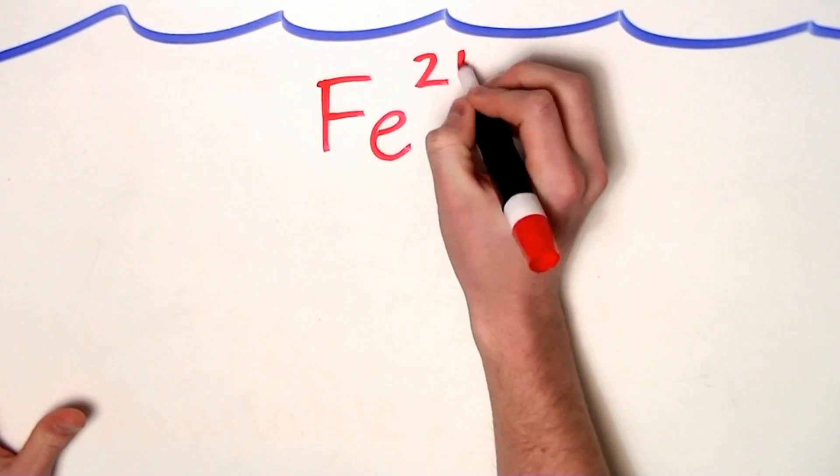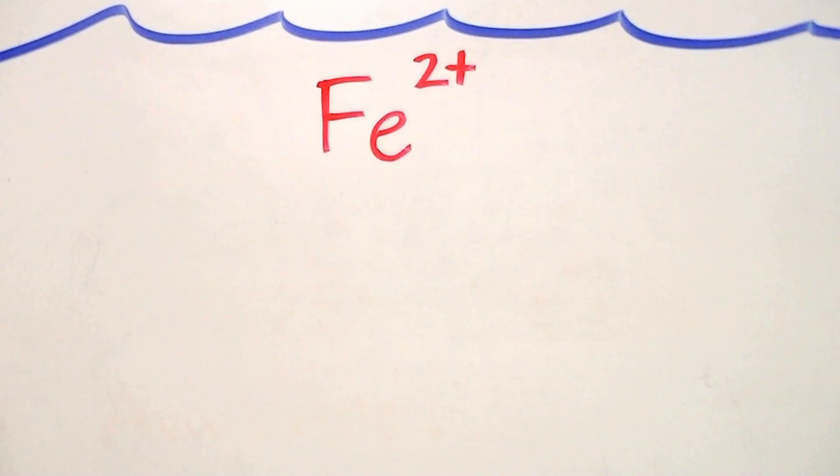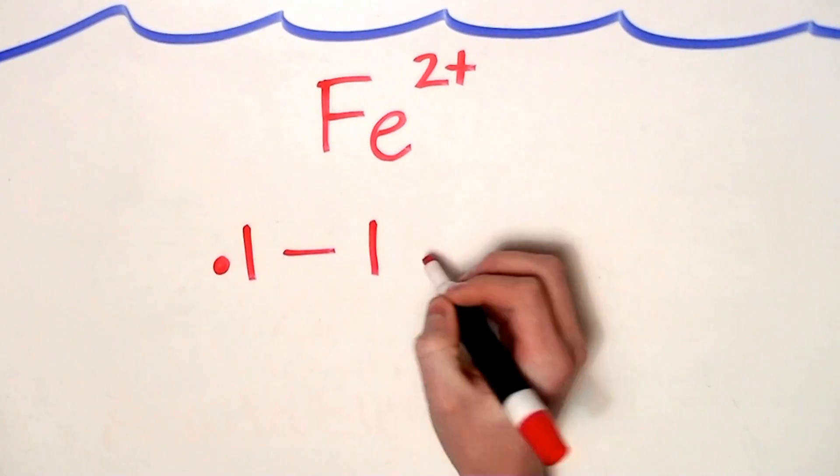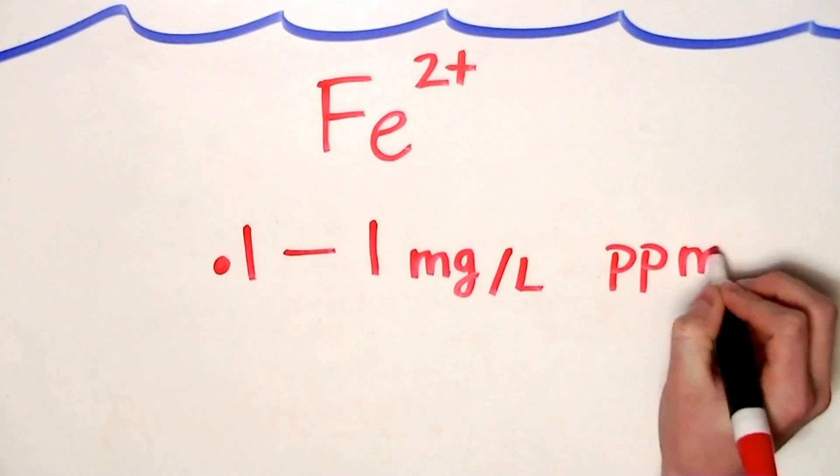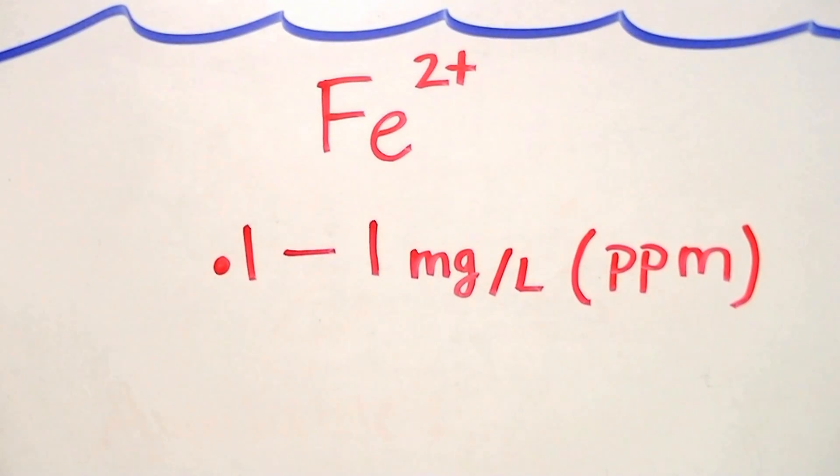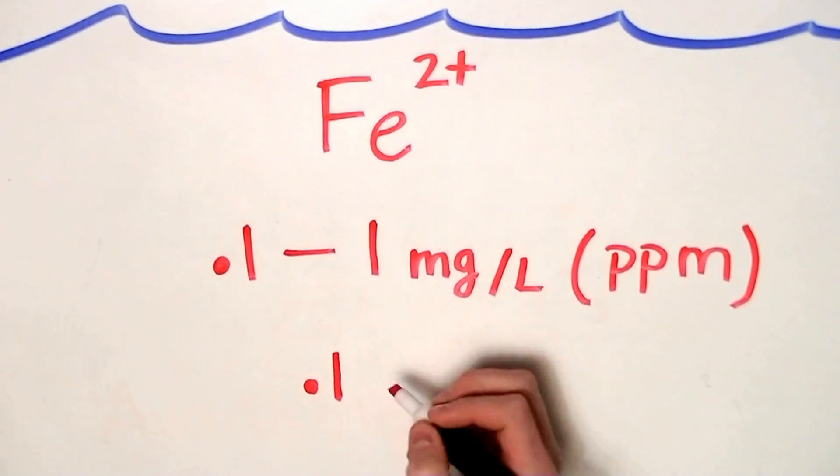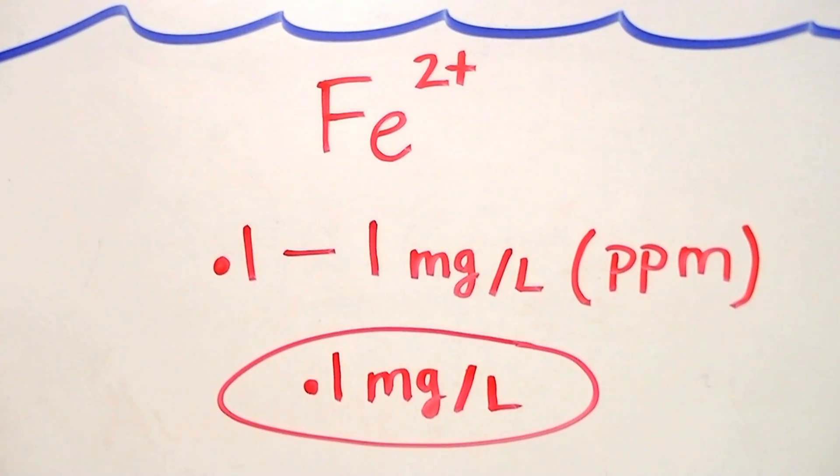Now that we know what we need, let's talk about what concentration of iron 2 we want to achieve and how to make that solution. The Estimative Index suggests that we maintain a concentration between 0.1 and 1 mg per liter iron 2. Don't forget that milligrams per liter is the same as parts per million. We're going to stick with dosing our aquarium with 0.1 mg per liter, because we want to limit the amount of sulfate we put in our tank.